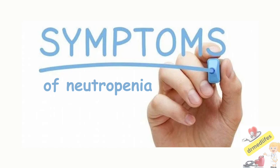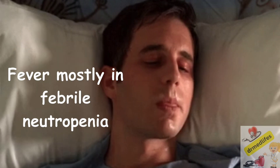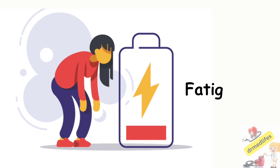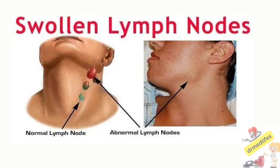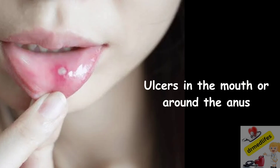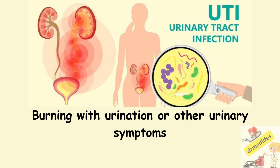Symptoms of neutropenia may include fever, mostly seen in febrile neutropenia, fatigue, sore throat, swollen lymph nodes, ulcers in the mouth or around the anus, diarrhea, burning with urination, or other urinary symptoms.